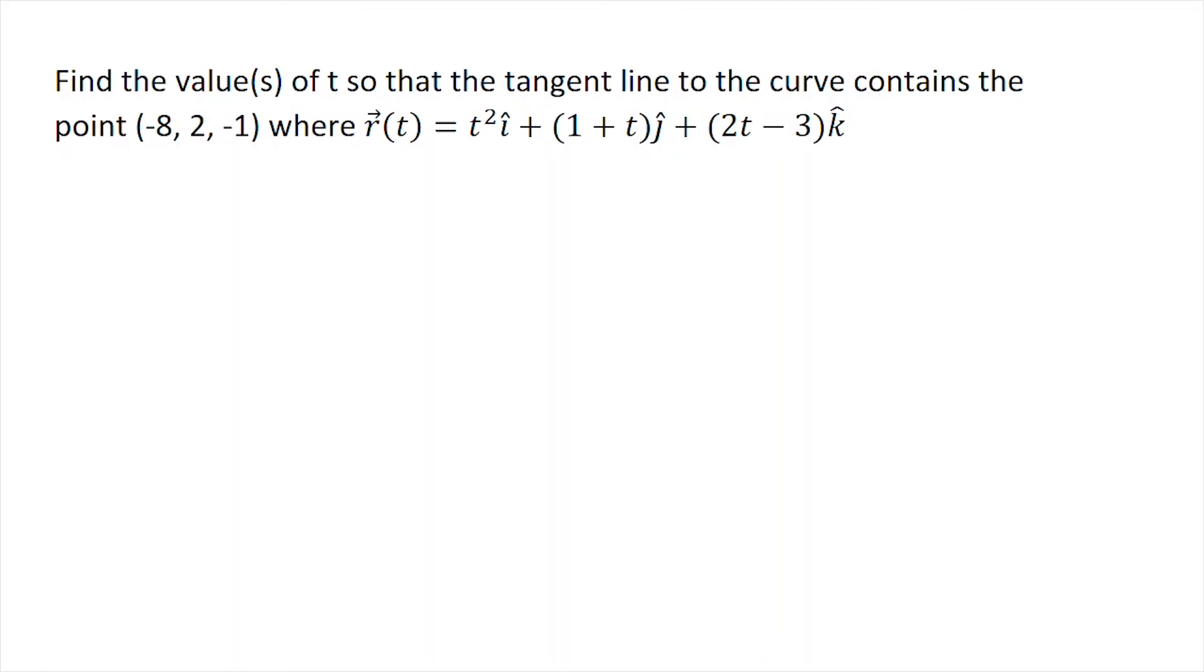In this problem, we want to find the value of t, or the exact position along the path of the particle, so that the tangent line to the curve would contain the point (-8, 2, -1). We're given the position vector of this particle: r(t) = t²i + (1 + t)j + (2t - 3)k.